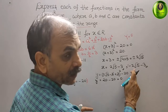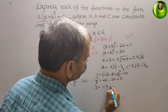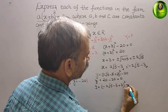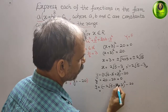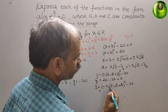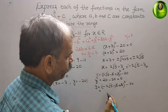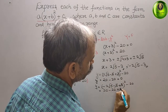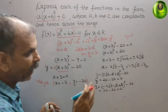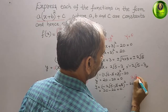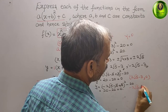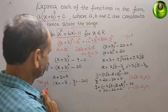Next, substitute x = -2√5 - 3: y = (-2√5 - 3 + 3)² - 20 = (-2√5)² - 20 = 20 - 20 = 0. So the two x-intercept coordinates are (2√5 - 3, 0) and (-2√5 - 3, 0). These are the three key points.